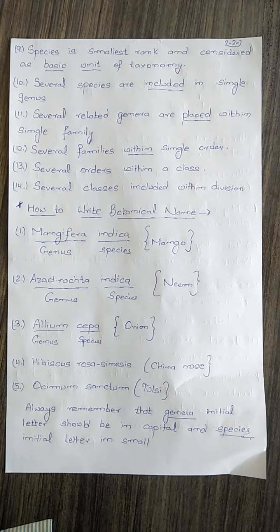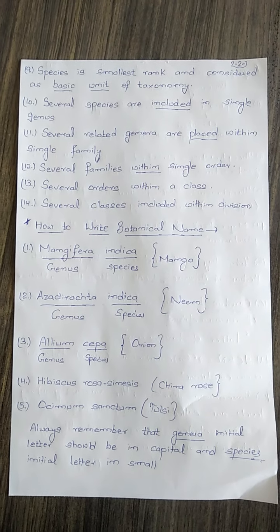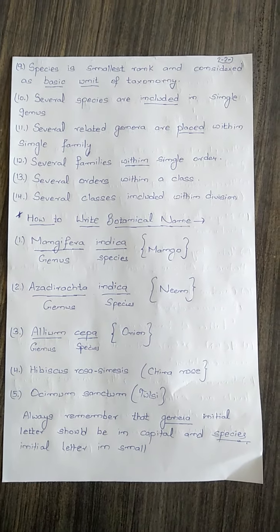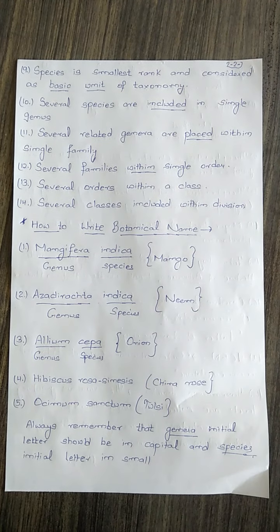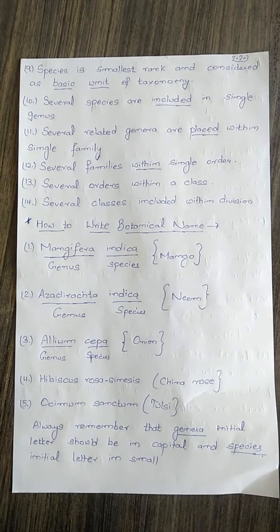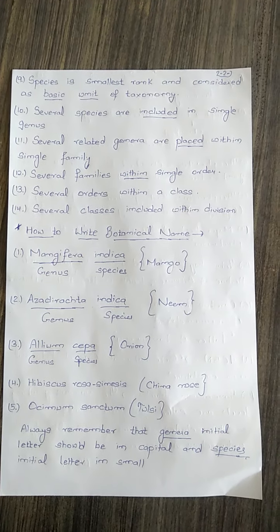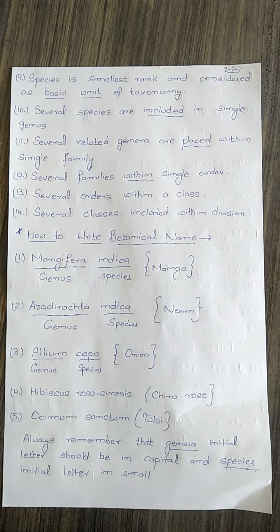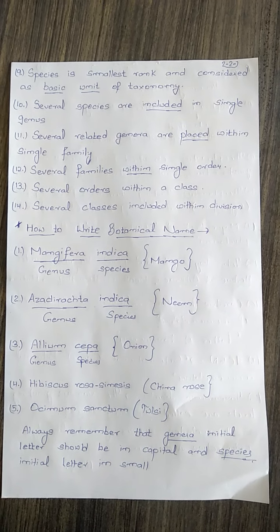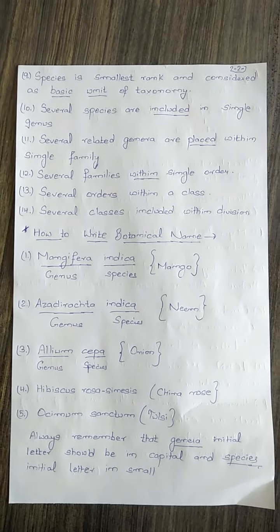Species is the smallest rank and is considered the basic unit of taxonomy. These ranks are arranged at a hierarchical level: several species are included in a single genus; several related genera are placed within a single family; several families within a single order; several orders within a class; and several classes within a division.